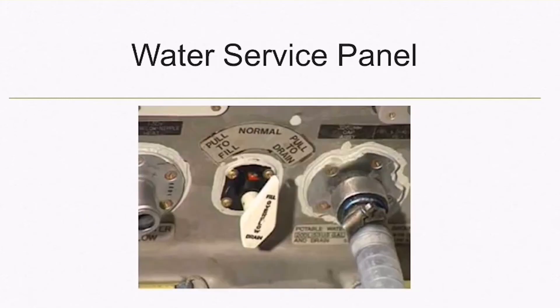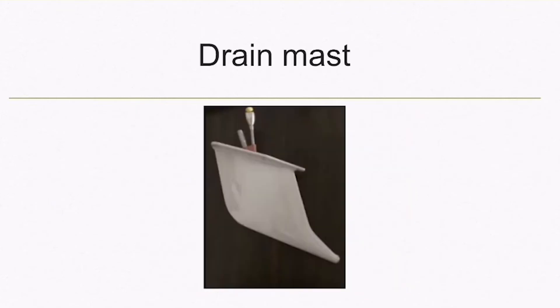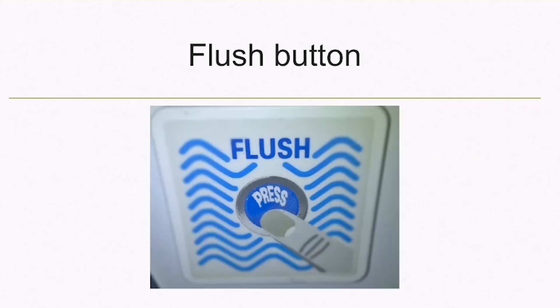The water from the sink or galley is drained overboard by two drain masts, and both of these drain masts are heated. So what happens to the waste in the toilet bowl?